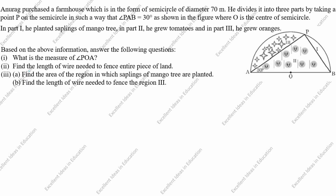Anurad purchased a farm which is in the form of a semicircle of diameter 70 meters. The diameter is given as 70 meters. He divides it into three parts by taking a point P on the semicircle such that angle PAB is equal to 30 degrees, where O is the center of the semicircle. The center point gives us two radii: 35 meters and 35 meters, since 70 divided by 2 equals 35 meters.